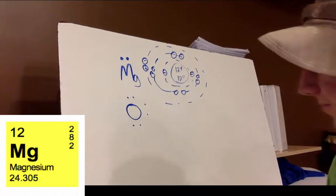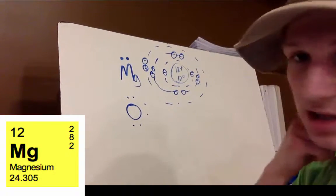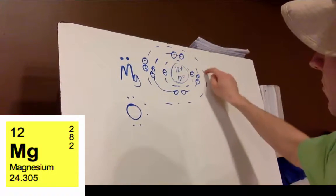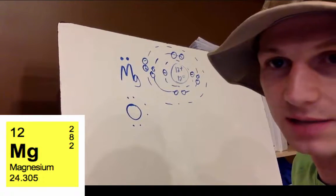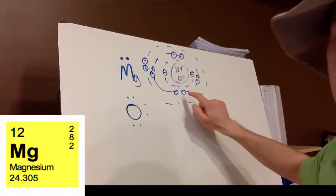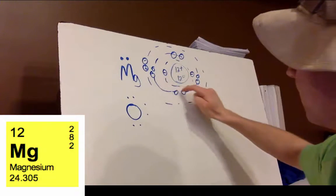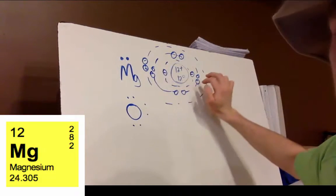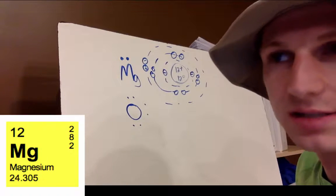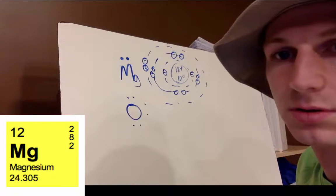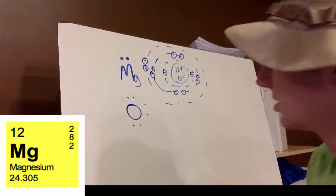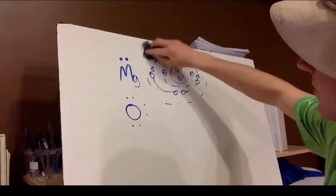Magnesium wants to be stable, so it has two options: it could pick up six more electrons to get a full outer shell, or it could lose these two and go back a shell, where it already has a full shell of eight electrons. Do you think it would be easier to give up two or to pick up six? It's easier to just get rid of two — that's what it does.